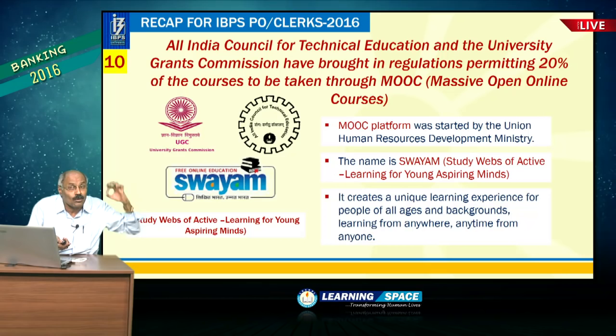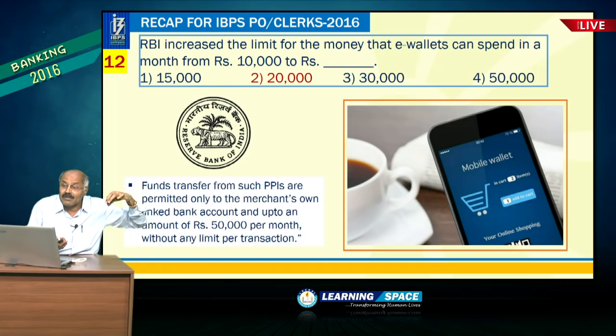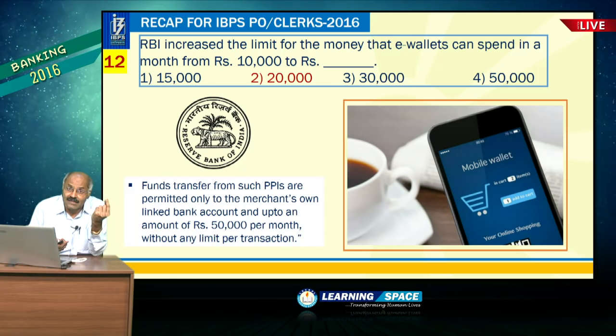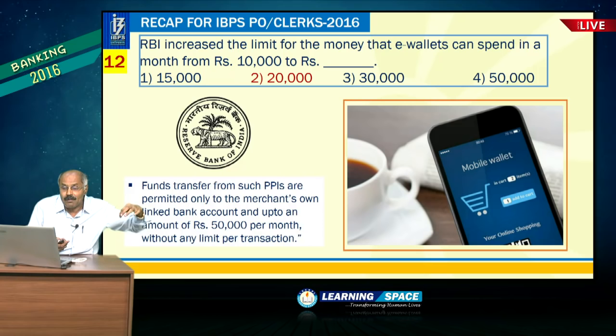Point of Sale machines are established in merchant establishments. RBI increased the limit for money that e-wallets can spend in a month from Rs. 10,000 to Rs. 20,000. If the account is linked with a merchant account and funds transfer from PPIs linked to the merchant's own bank account, the limit is Rs. 50,000.